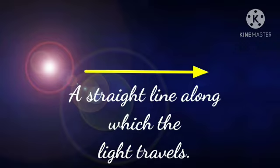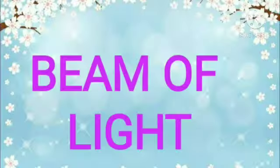Or we can say it is the path of light on which light travels. A ray is always shown with a straight line with an arrow head.